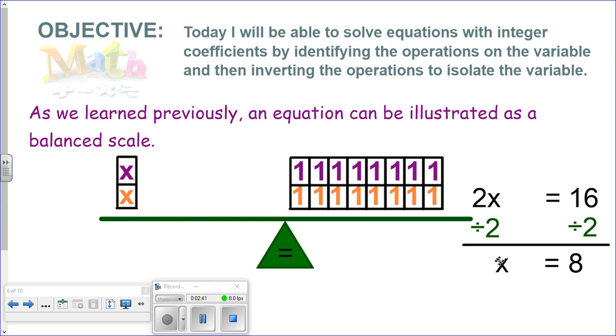Multiply by 2, divide by 2, cancels out. We're just left with x on the side. And 16 divided by 2 will be 8. And you can see in this illustration, this x aligns with 8 ones. And this x aligns with 8 ones. So 1x is equal to 8.